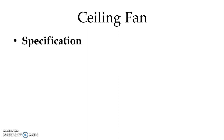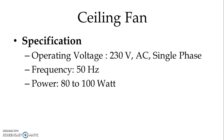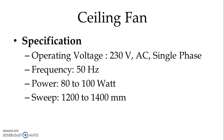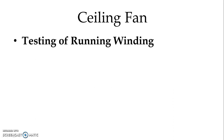Let us discuss the specifications of a ceiling fan. Operating voltage: 230 volt AC single-phase supply. Frequency: 50 Hz. Power consumption: 80 to 100 watts. Sweep, that is the size of the blade: 1200 to 1400 millimeters. Speed: 200 to 500 RPM.